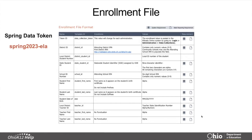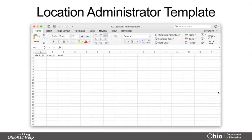Next is the enrollment file. We have a new token for the spring — it's going to be Spring 2023-ELA. That's the new data token, so we want to make sure that token is used when entering the enrollments. The enrollments link the teachers and the students in the system, so you'll have to reload the enrollment file in order for those linkages to occur, and all of the fields are required for that. The Location Administrator Template is a very simple file to load — all you need is the building administrator's district ID, school ID, and administrator's email. We recommend doing this at the beginning of the window so that building administrators have access to the reports for their locations.